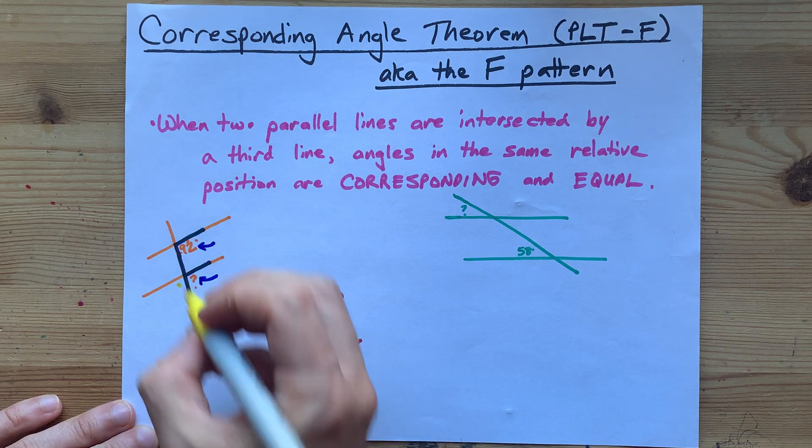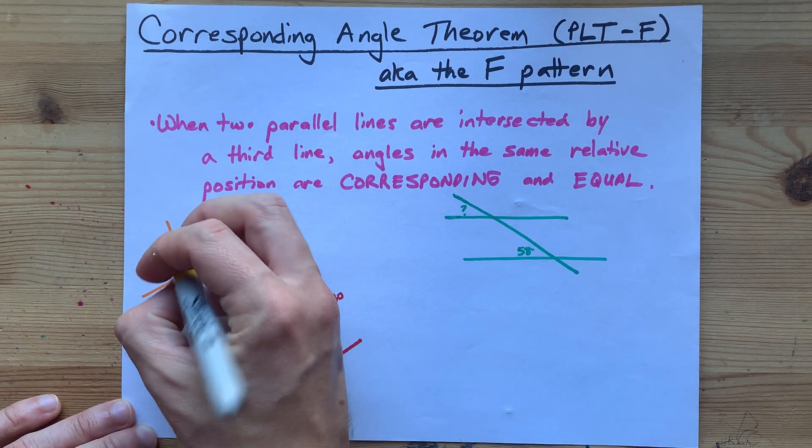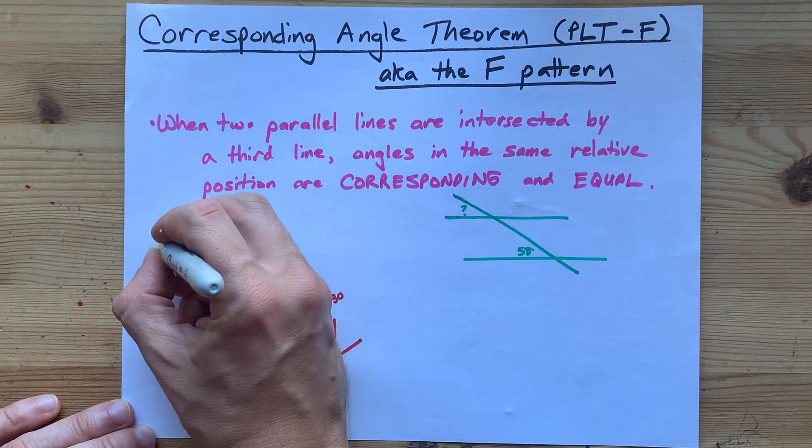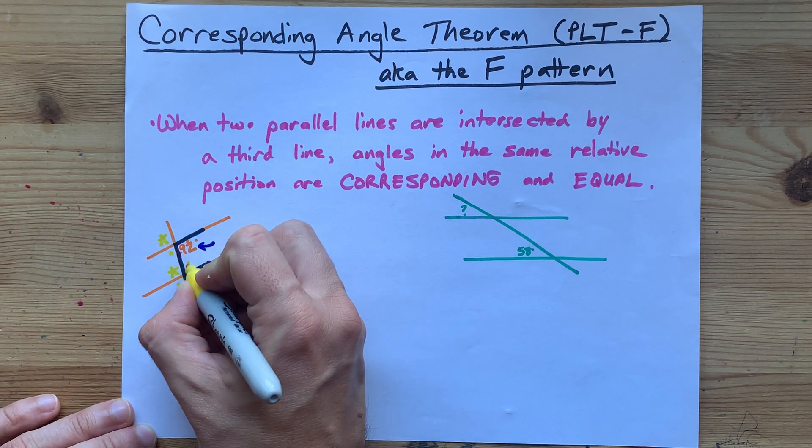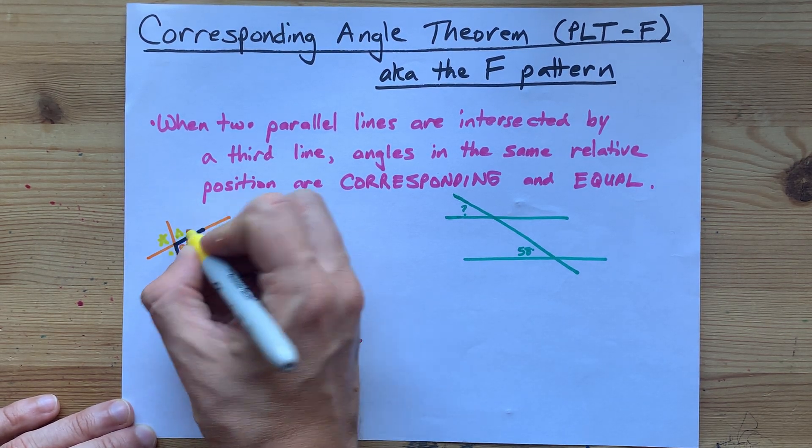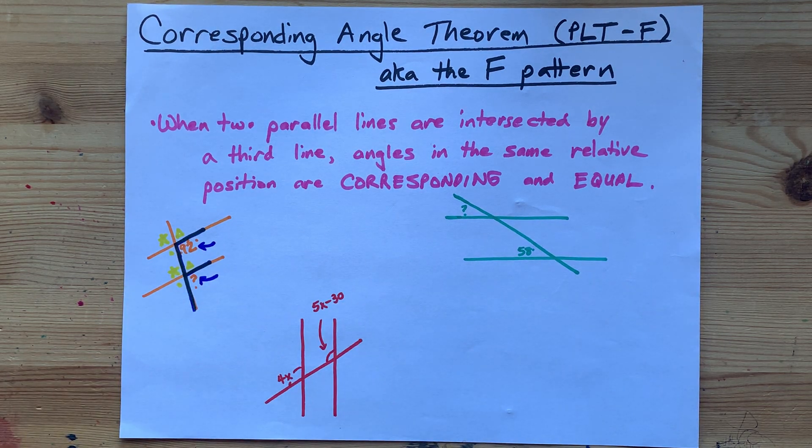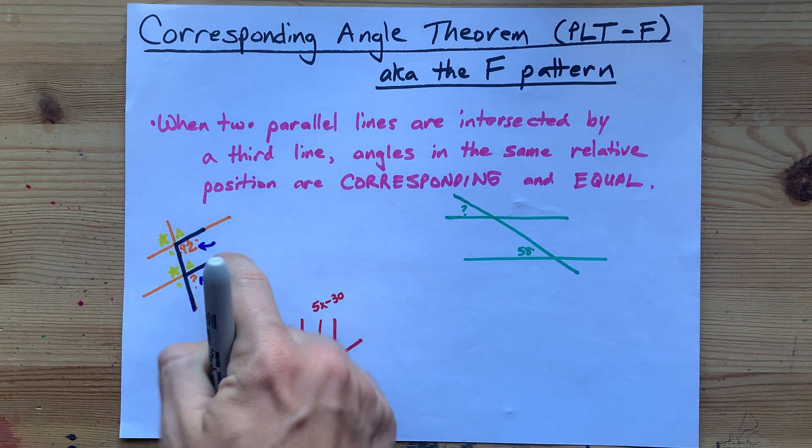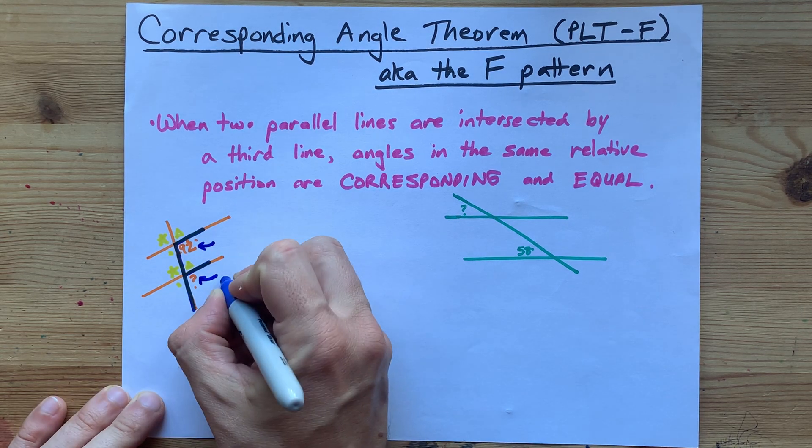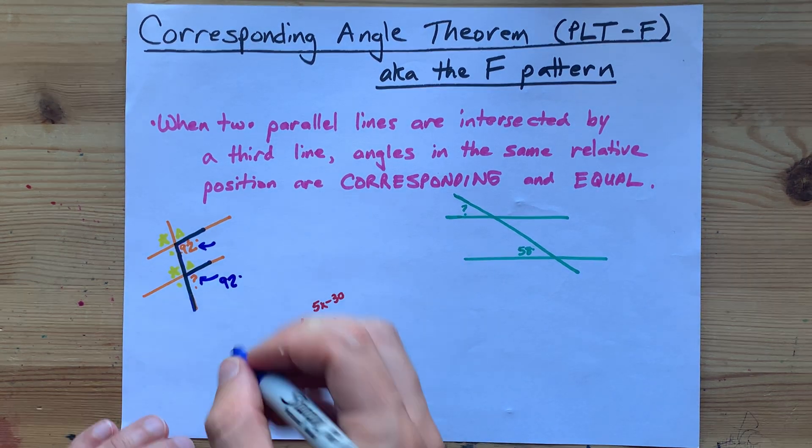This angle is going to be the same as that angle, and this angle size is going to be the same as that angle size. Those are all sets of corresponding angles, but what matters to us here is the fact that if that's 92 degrees then that one has to be 92 degrees as well.